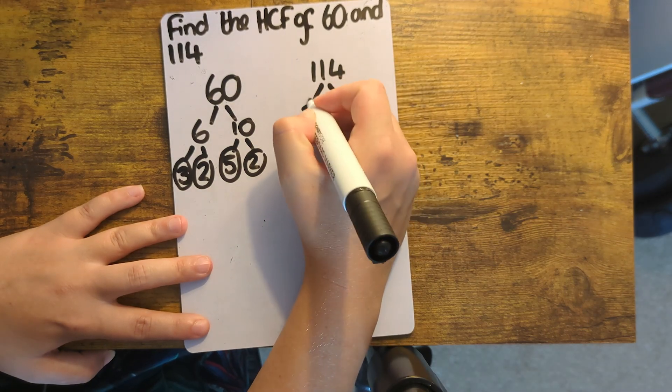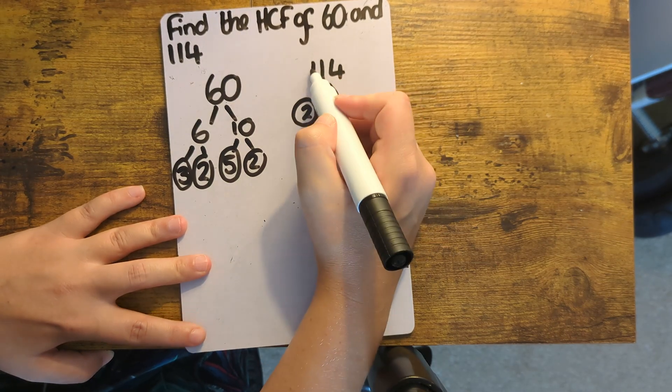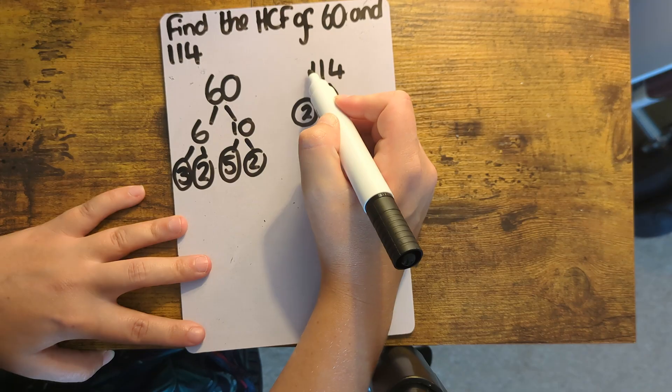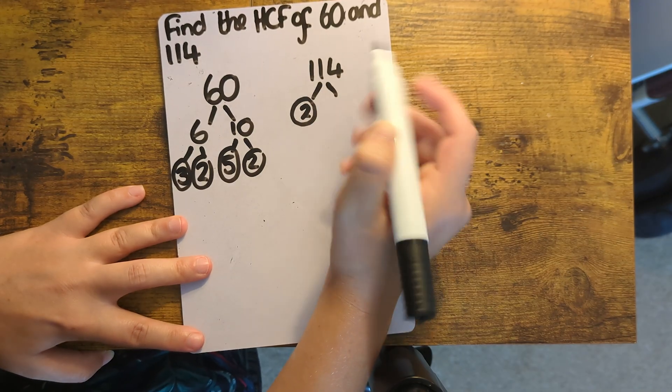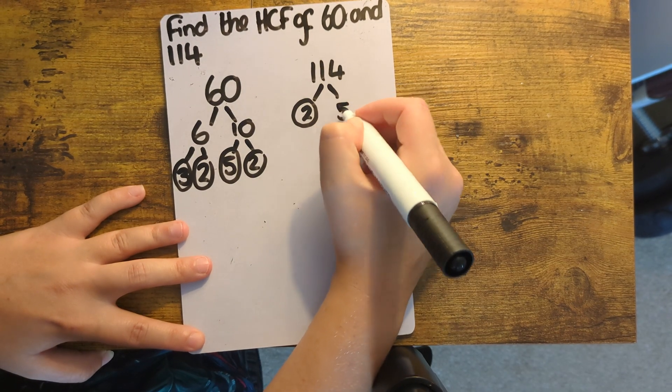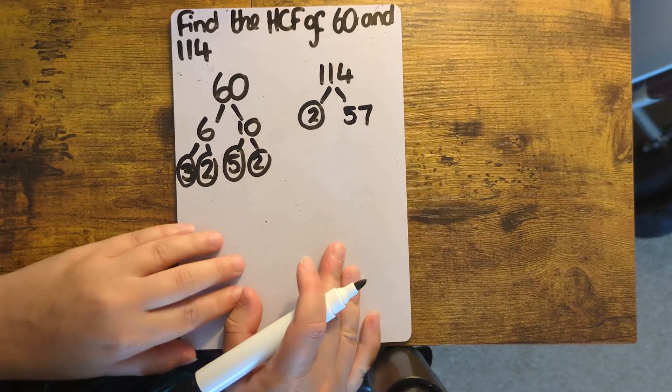This is an even number, so I'm going to be dividing it by 2. Then I'm going to halve 114. Half of 100 is 50, half of 14 is 7, so 50 plus 7 is 57.